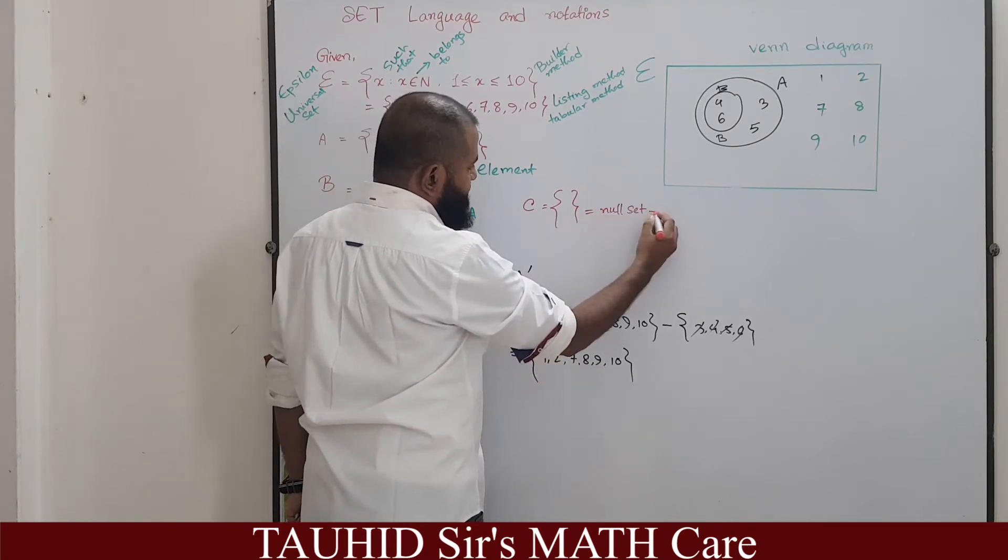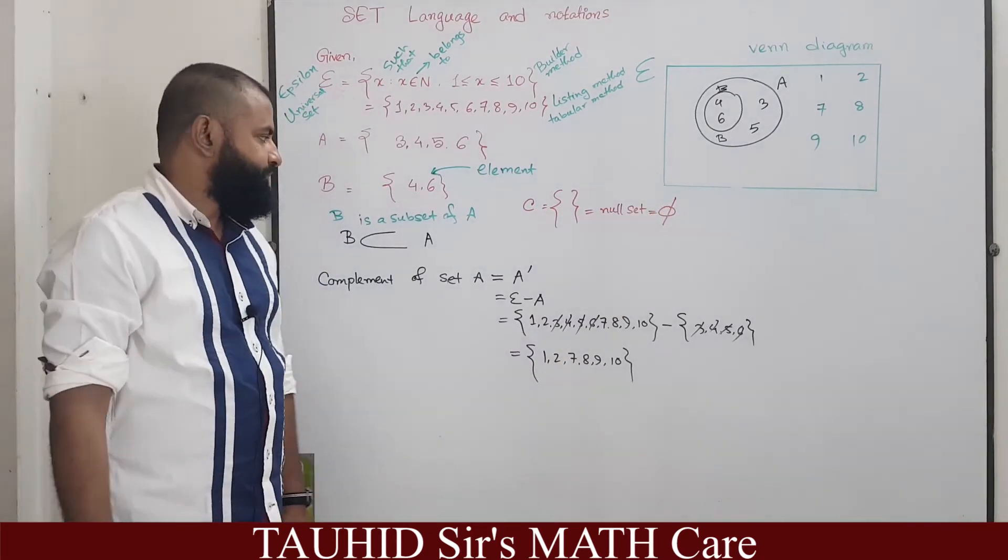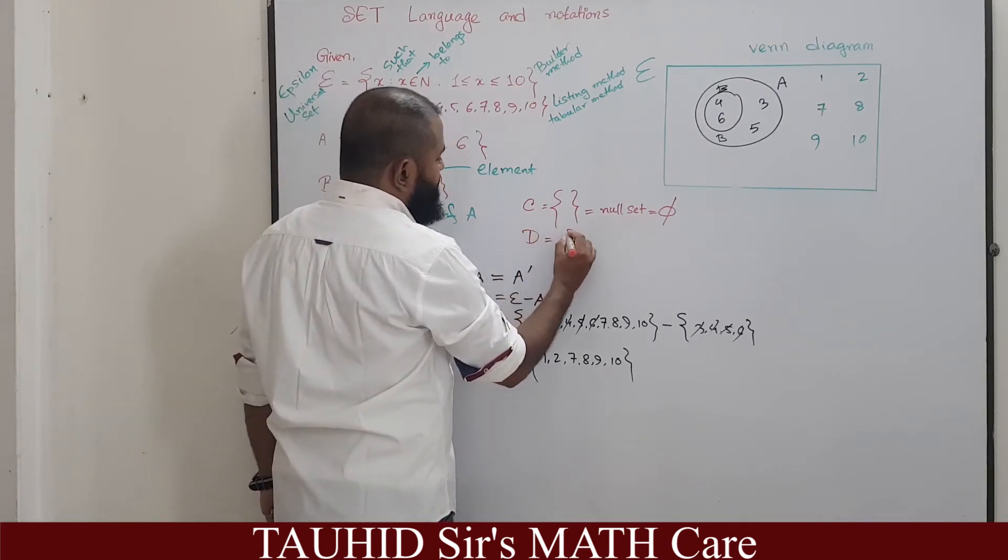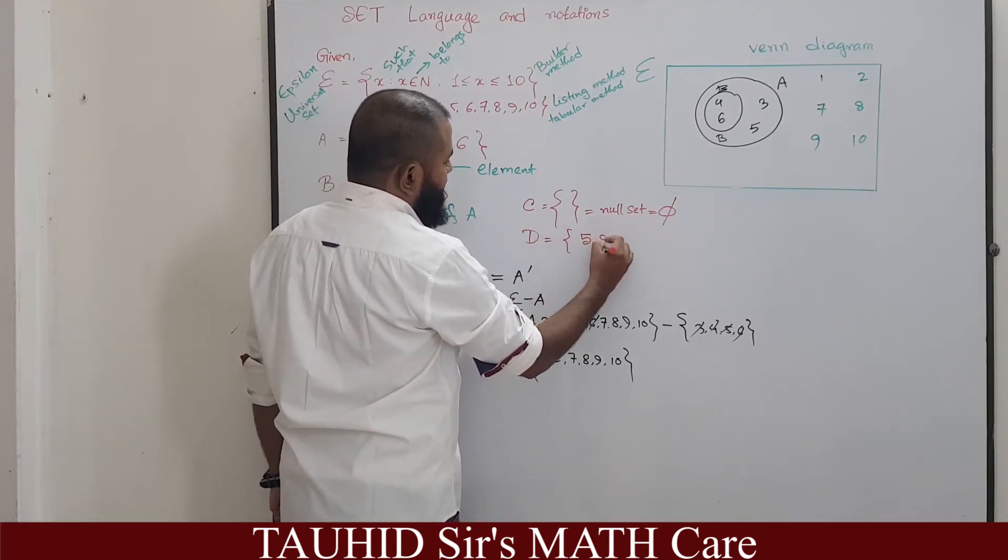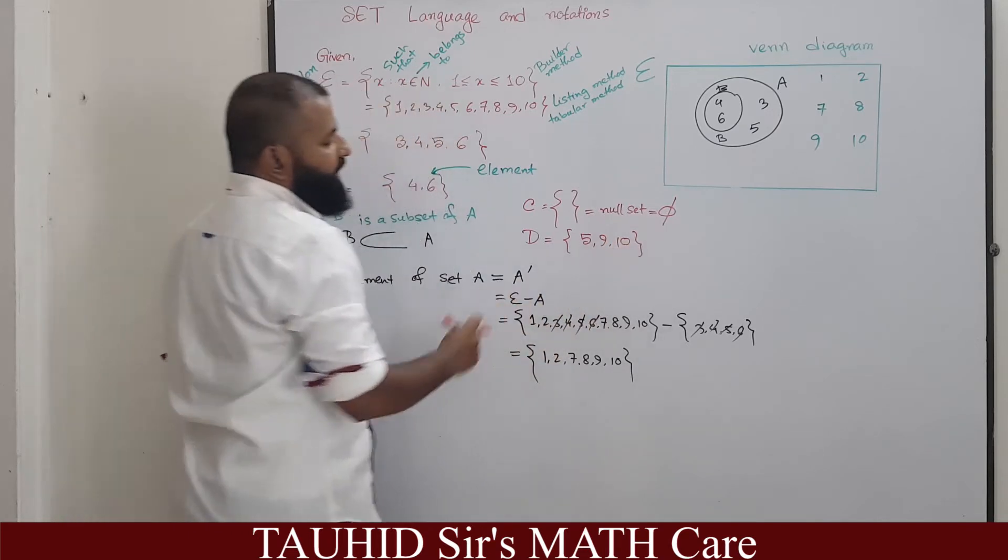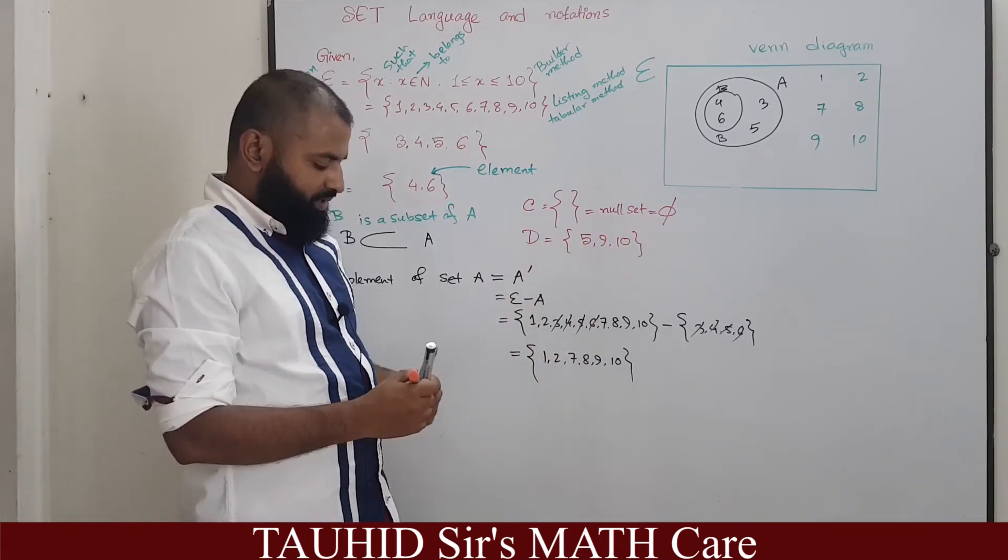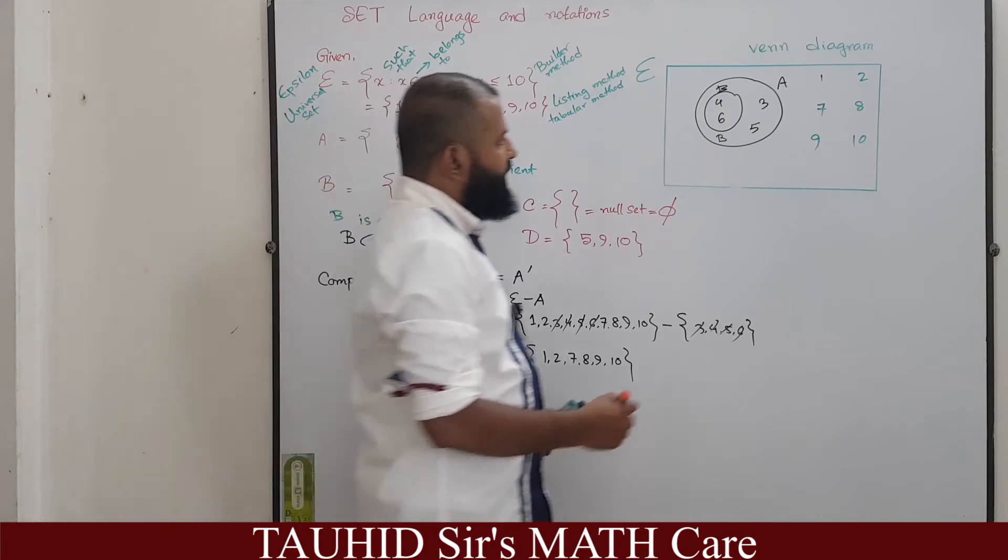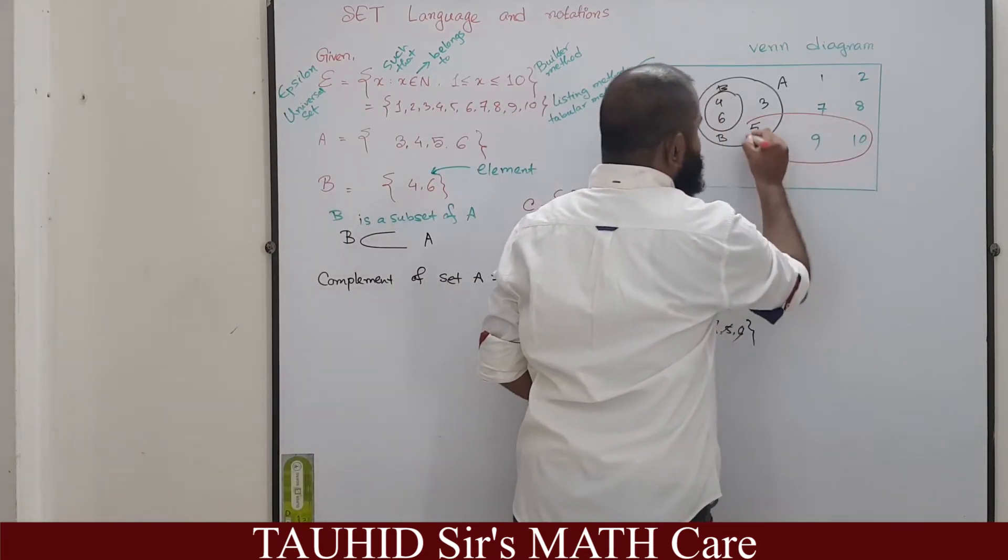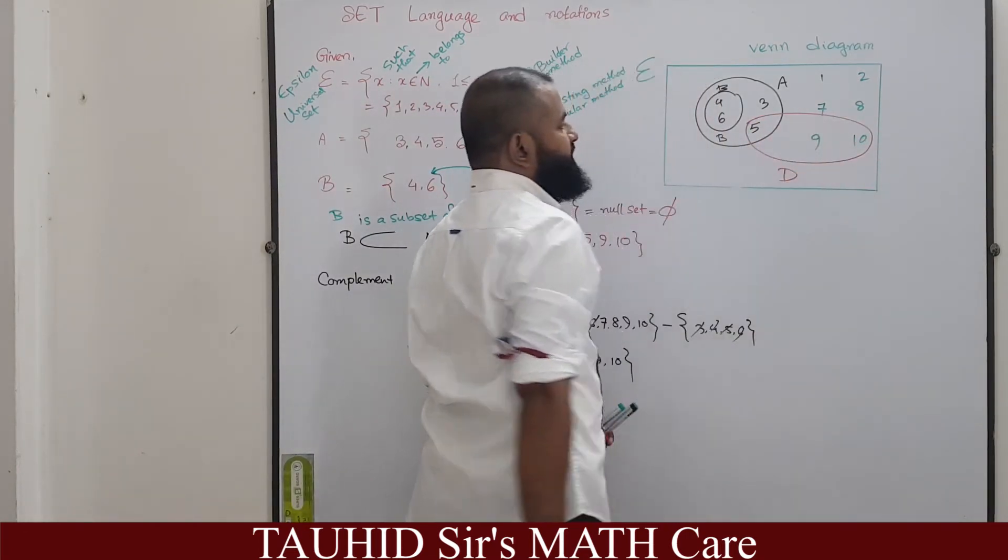Now declare another set D equal to 5, 9, 10. If we draw this set in this diagram, how would it look like? It will look like this. This set is D, it contains 5, 9 and 10.